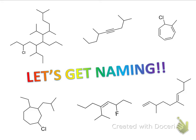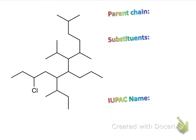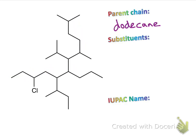Let's get naming! Here we have a fun-looking alkane. Please feel free to pause to see if you can name this yourself. Otherwise, let's get to it. First, we're going to find the parent chain. The longest chain spans through this path on our alkane, and this chain has 12 carbons in it, so this is an example of a dodecane.